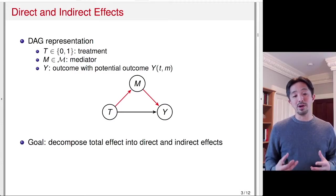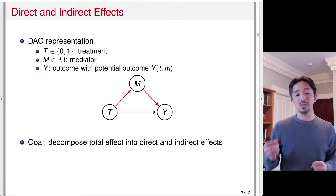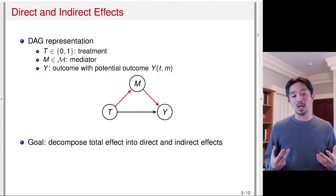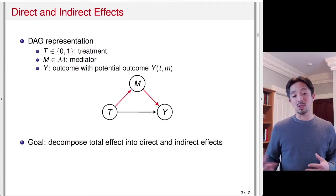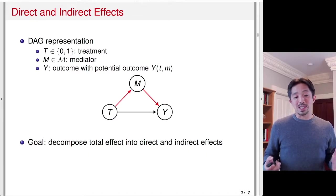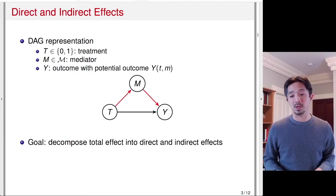If the mediator M is playing a very important role, we should see the indirect effect — the effect of going from T to M to Y, the red arrows — representing a much larger proportion of the total effect compared to the direct effect, which is the black arrow. That's the idea of decomposing the total effect into the indirect effect through M, and the direct effect, which represents all other possible mechanisms.